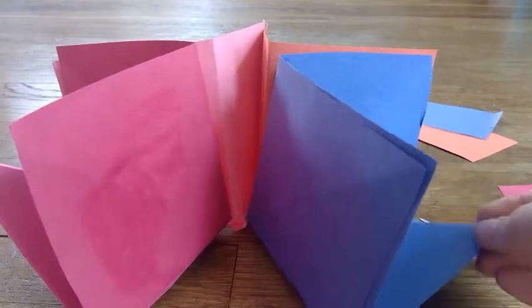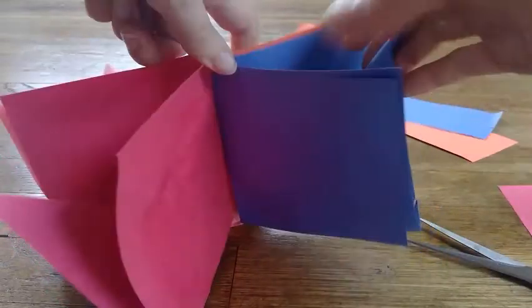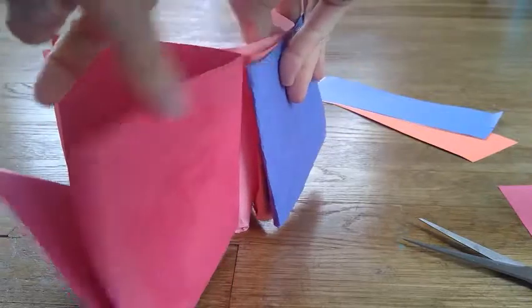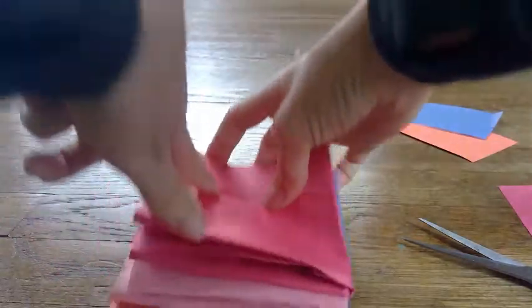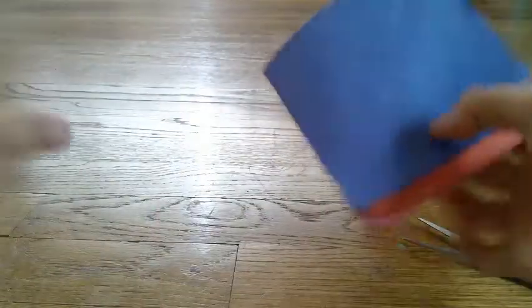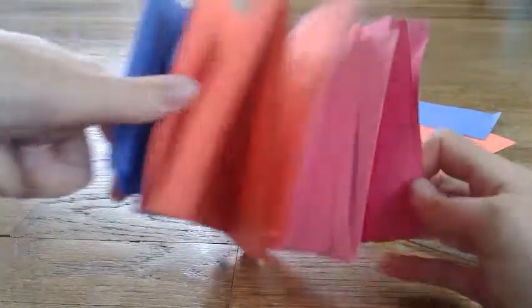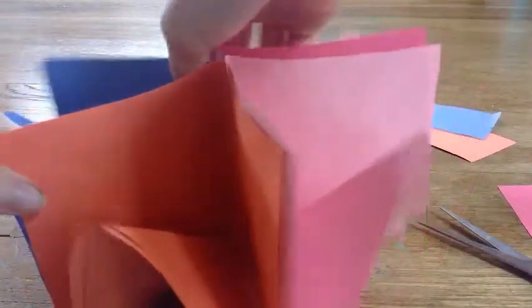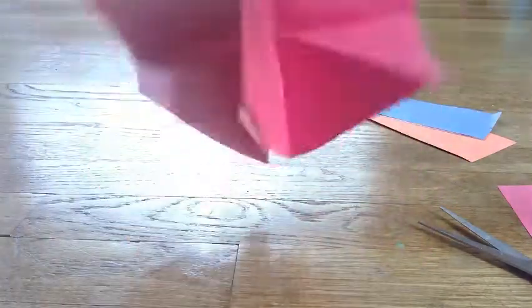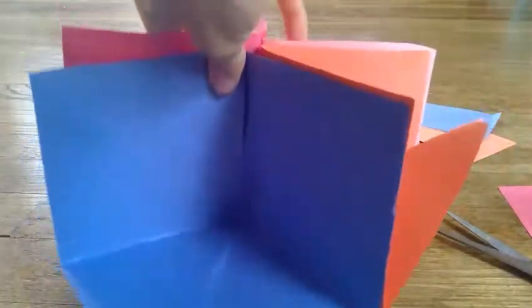So you're going to take the floor and fold it at the crease. You can do that with all the floors. And then you have a little book house and you can unfold it. And then it has four rooms.